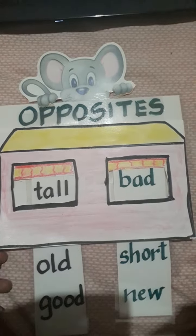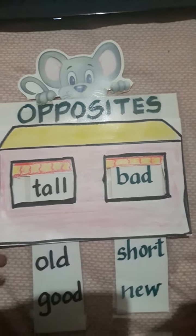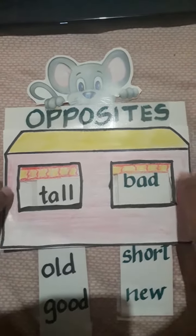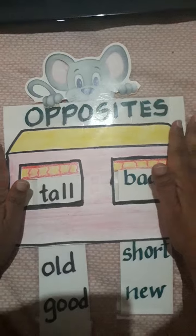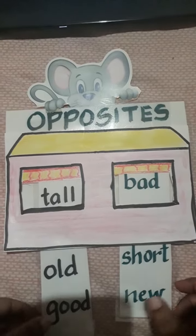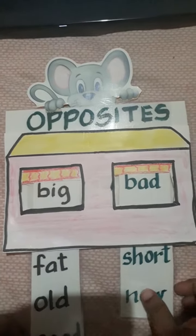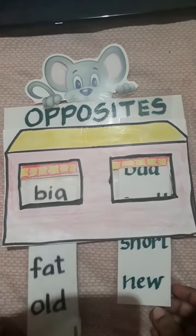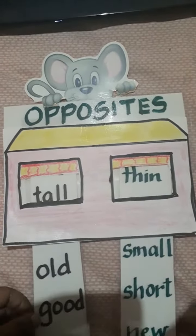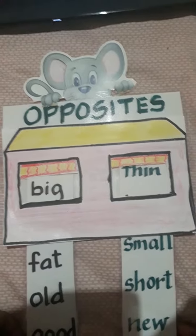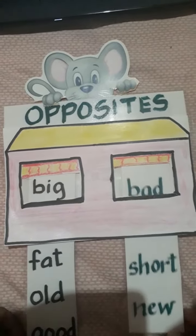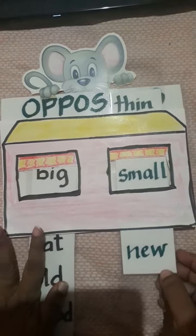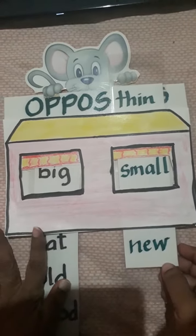Today we are going to talk about opposites. And here we have Mr. Mouse, and Mr. Mouse has a house of opposites. So we are going to help him to match his opposites. We have big and small.